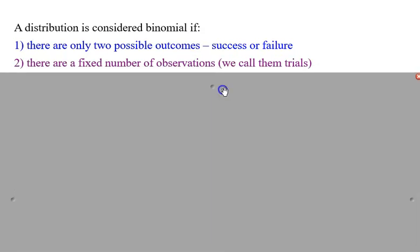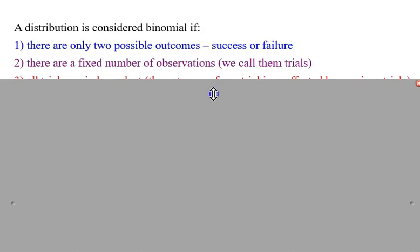The next thing is there are a fixed number of observations or trials. Let's say you have a test with maybe 17 questions on that test. Each question is going to be considered a trial, so there's 17 trials here. Either get it right or get it wrong - those are your two outcomes.